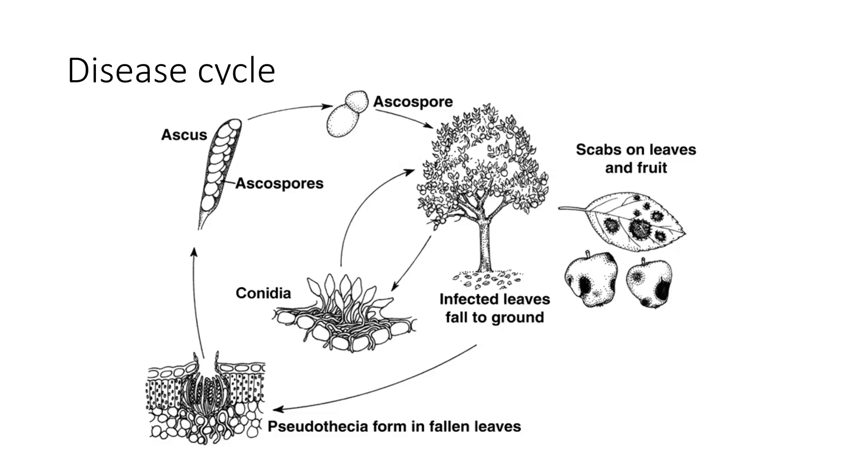When we look at this, it becomes very interesting to understand exactly what's going on, and we call this format a disease cycle. In order to fully understand how you're going to control a pathogen, you must understand the disease cycle.